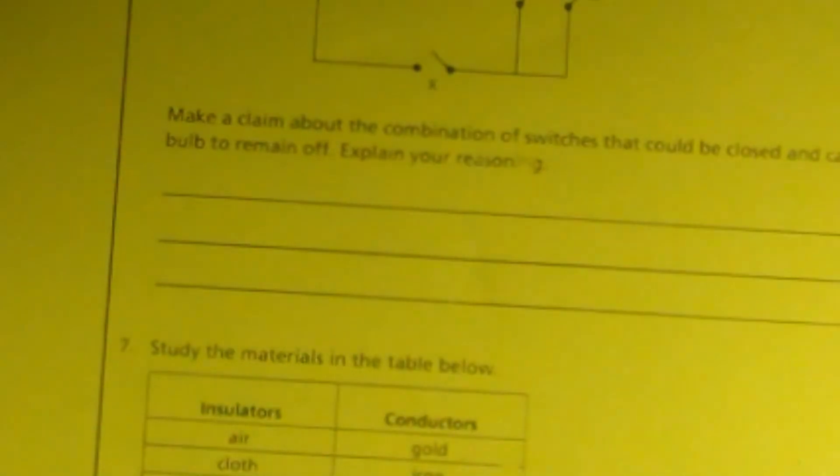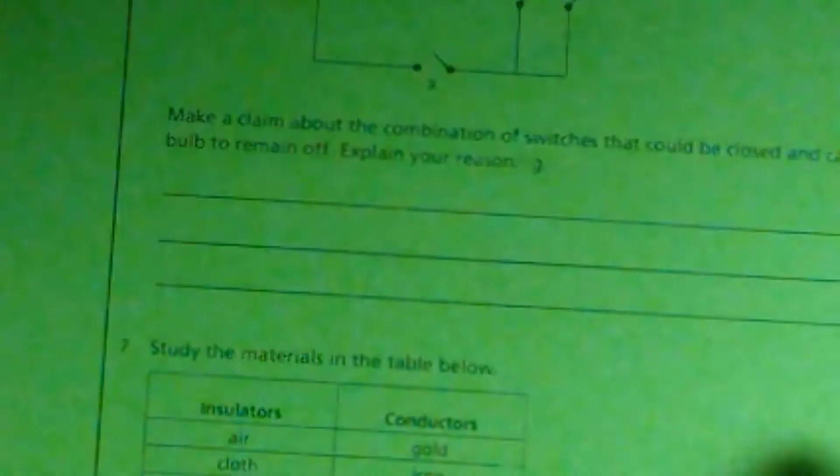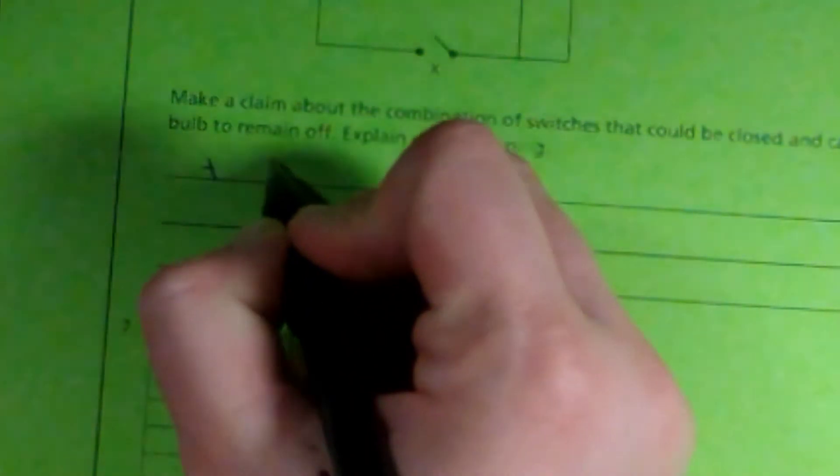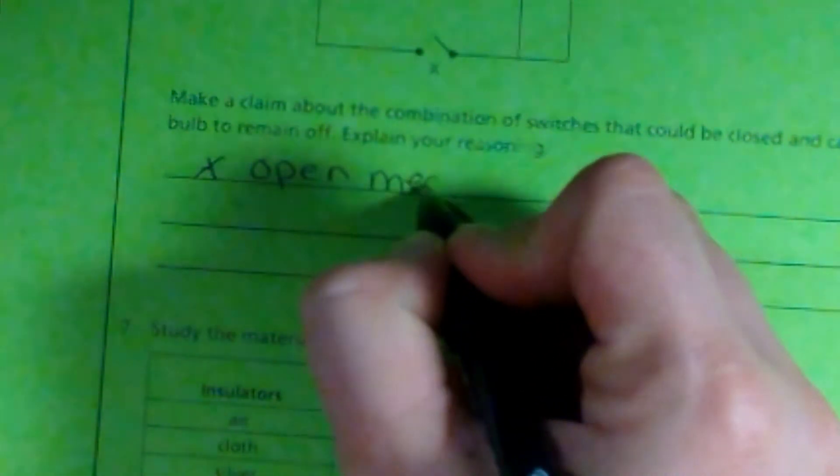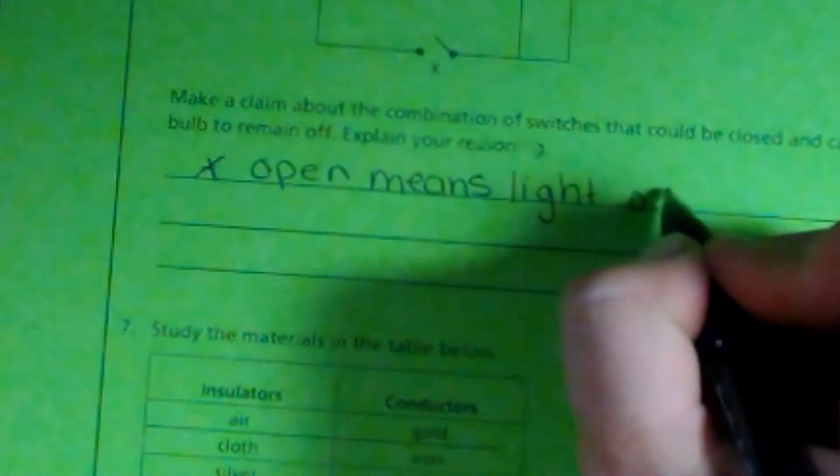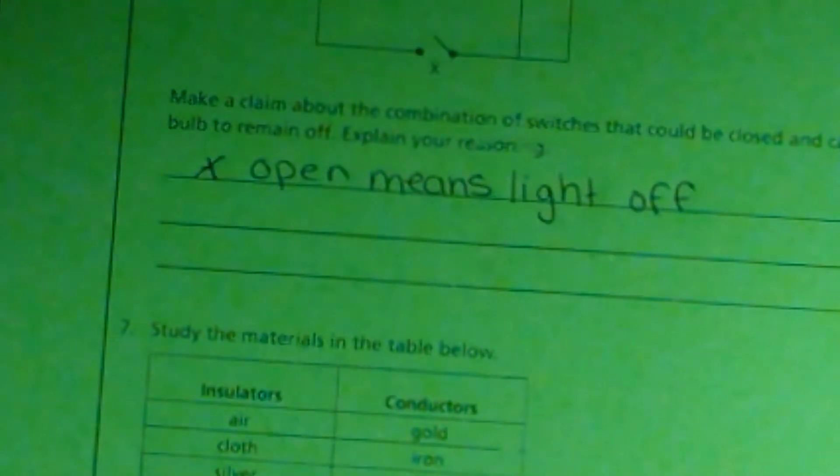So if I have, let's see here, X open. Anytime I have X open means light off. So I can have Y closed and or Z closed and the electricity would stop right here.